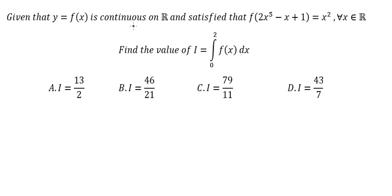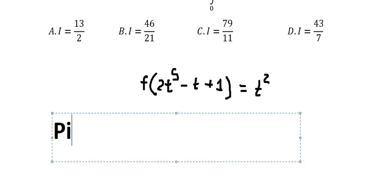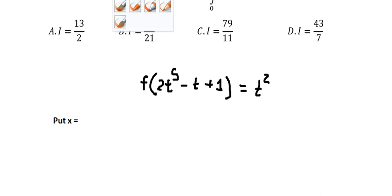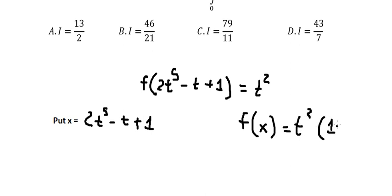Hello everybody, today I want to show you how to find this integral. The first thing I need to do is change the value of x into t. This one is about t squared, and later I will set s equal to this polynomial. So we will have 2t to the power of 5 minus t plus 1, which means f of x equals t squared. This is the first substitution.